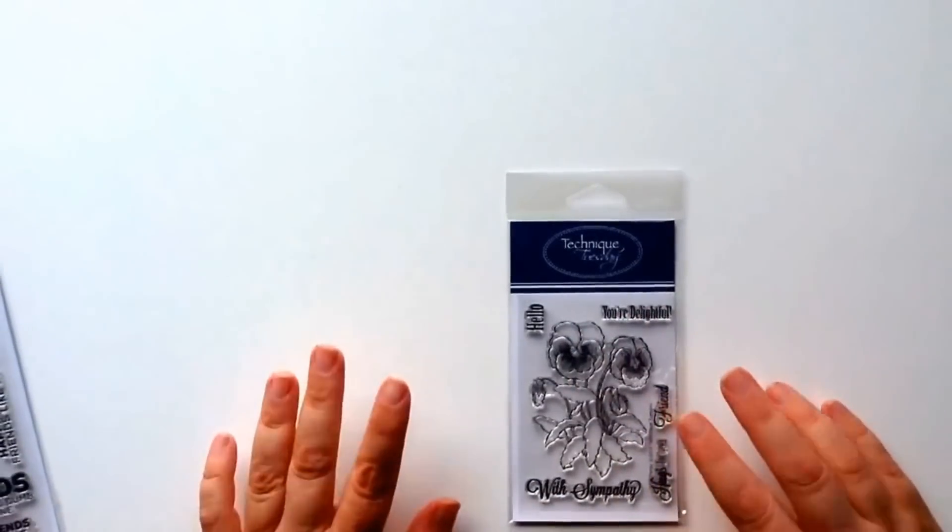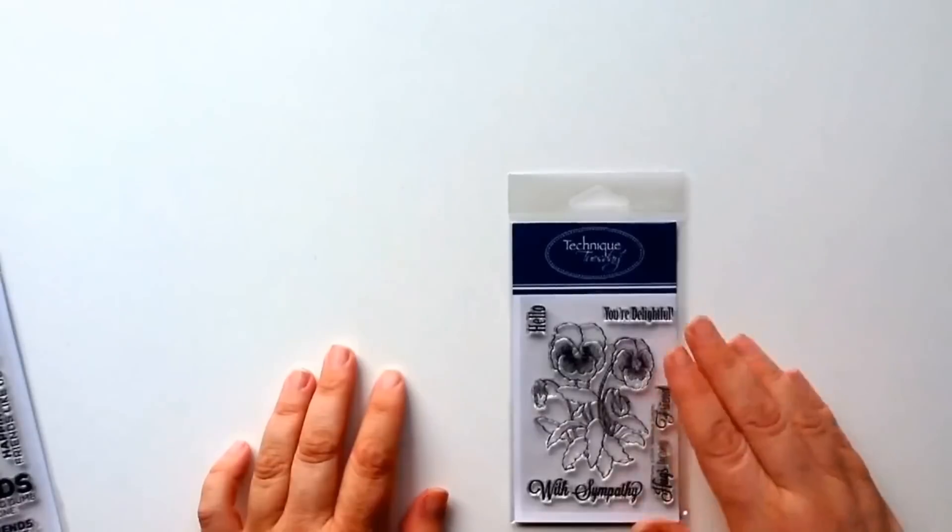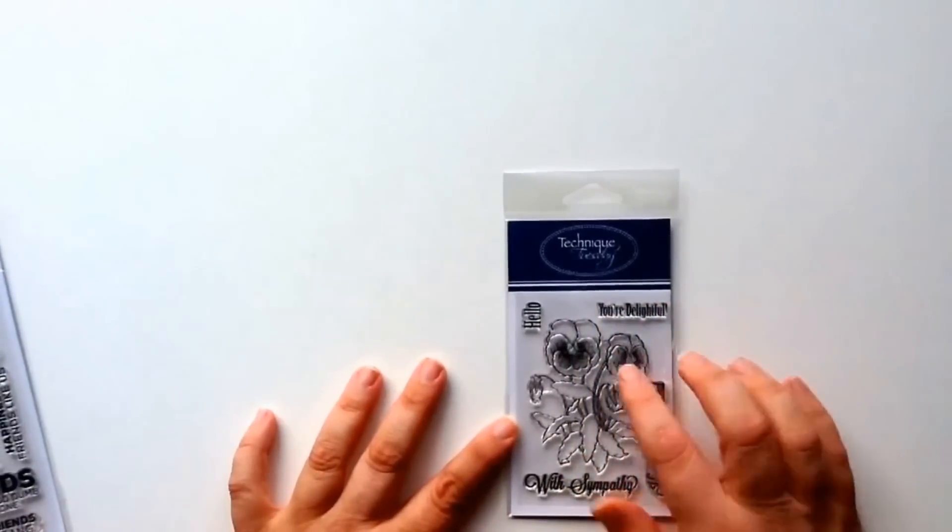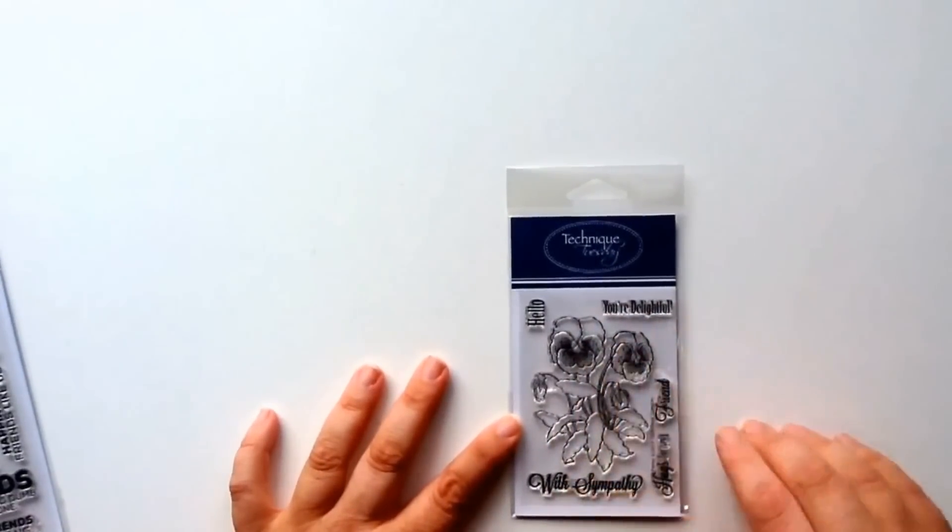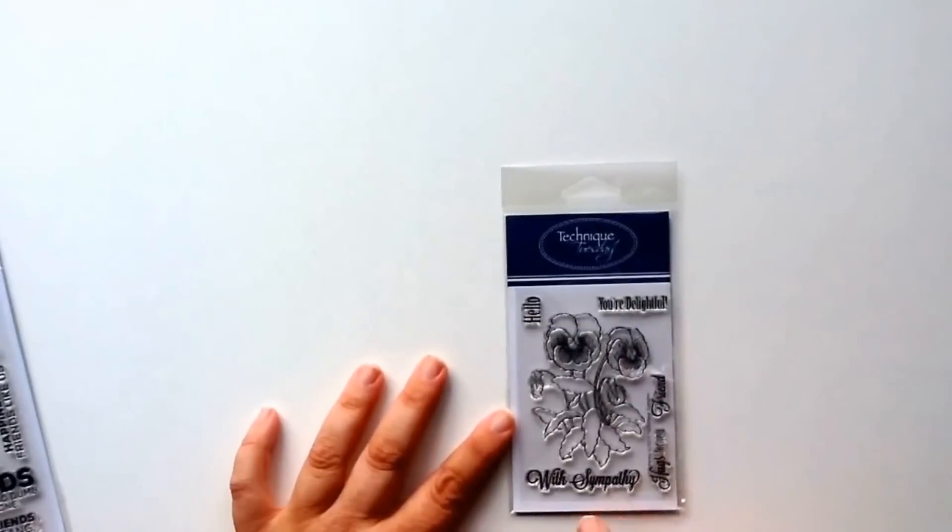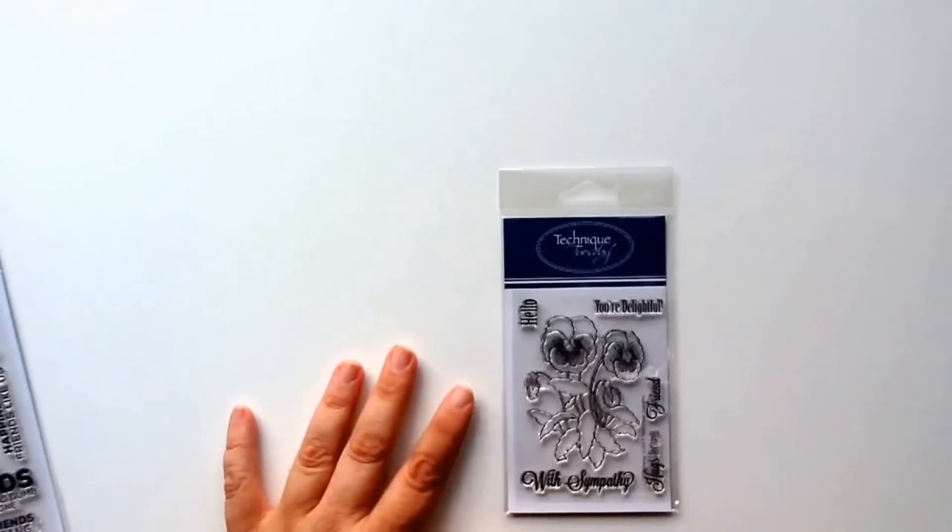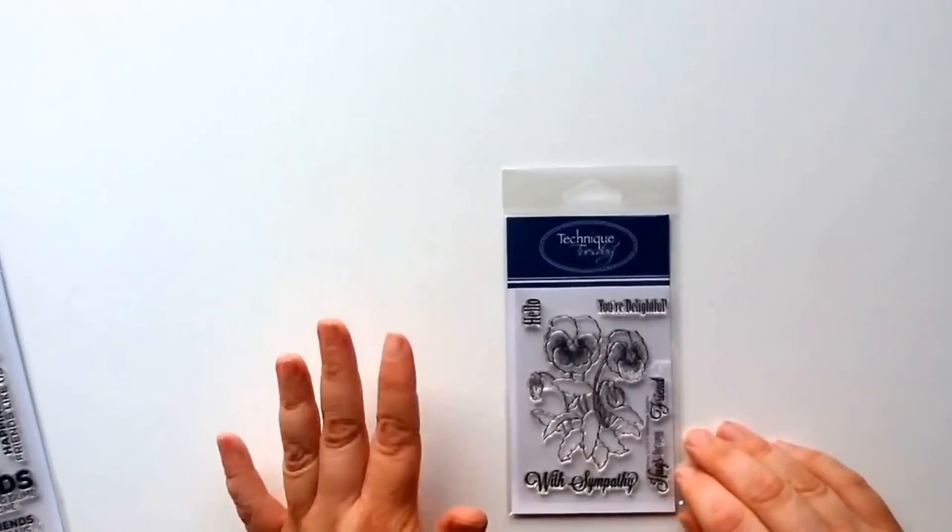Another new product this month is the pansy stamp set. This is a beautiful flower stamp. So you've got this beautiful pansy, you've got some pretty leaves and then the flowers, and then you've got some great phrases. I especially love that 'with sympathy' phrase. I just think the font is so beautiful. Can't wait to make some cards with this stamp set.